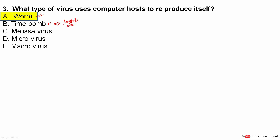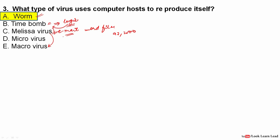A logic bomb is software that executes when a particular logical condition is satisfied. A time bomb is a part of logic bomb — it executes at a predefined time, for example at 10 AM. Another important term is the Melissa virus, which is a fast-spreading macro virus distributed as an email attachment. It generally infects Word files, specifically from Word 97 and 2000.